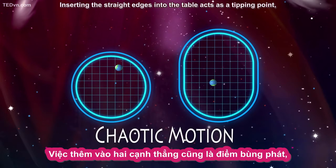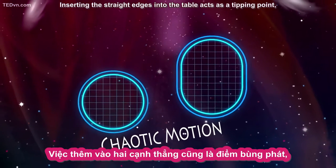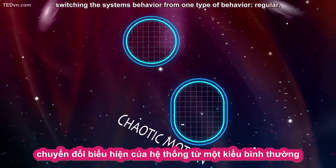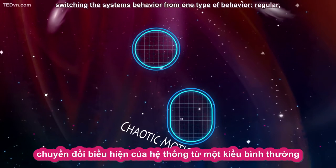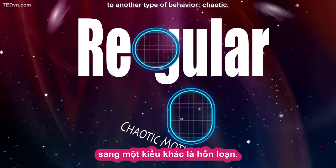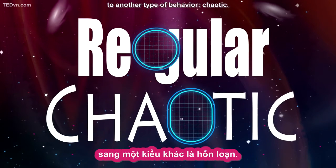With only a small change to the constraints under which the system operates, we have shifted the billiard motion from behaving in a stable and predictable fashion to fluctuating wildly, thus creating what mathematicians call chaotic motion. Inserting the straight edges into the table acts as a tipping point, switching the system's behavior from one type — regular — to another type — chaotic.